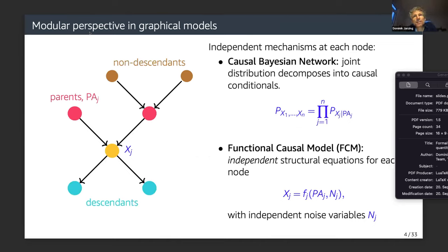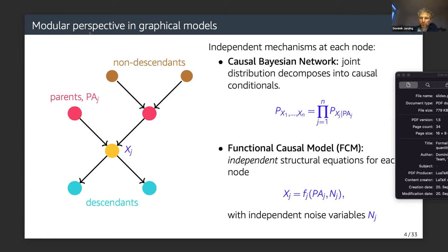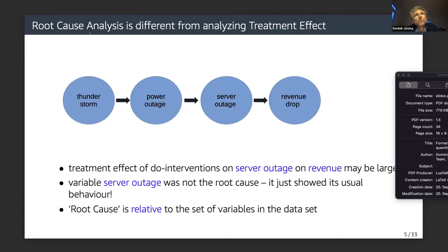The modular perspective in graphical models should be quite familiar. We have a causal Bayesian network where the distribution decomposes into the conditional distributions of each node given its parents — its direct causes. A more fine-grained model is the functional causal model (FCM), where every node is a deterministic function of its parents and independent noise variables. We need both kinds of modular decompositions.